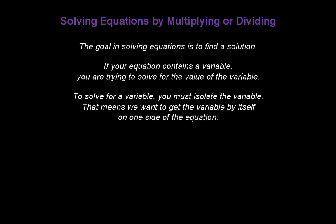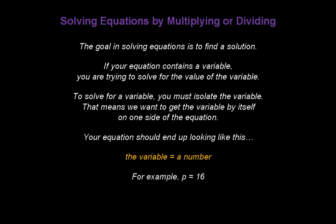And to solve for a variable, you must isolate the variable. That means we want to get the variable by itself on one side of the equation. Your equation should end up looking like this: the variable equals a number. For example, p equals 16.